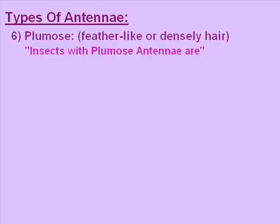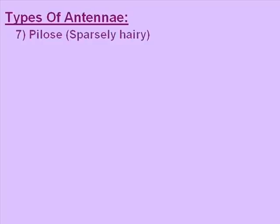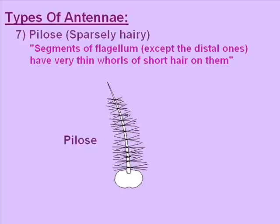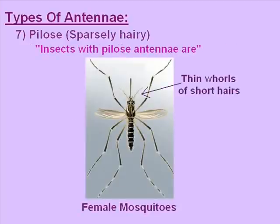Insects having plumose antennae are male mosquitoes — at the head of male mosquitoes the antennae have thick whorls of long hairs. The seventh type is pilose antenna. Pilose means sparsely hairy — in contrast to plumose, which had densely hairy segments. Pilose: the segments of the flagellum, except the distal ones, have very thin whorls of short hairs on them. Insects with pilose antennae are female mosquitoes.